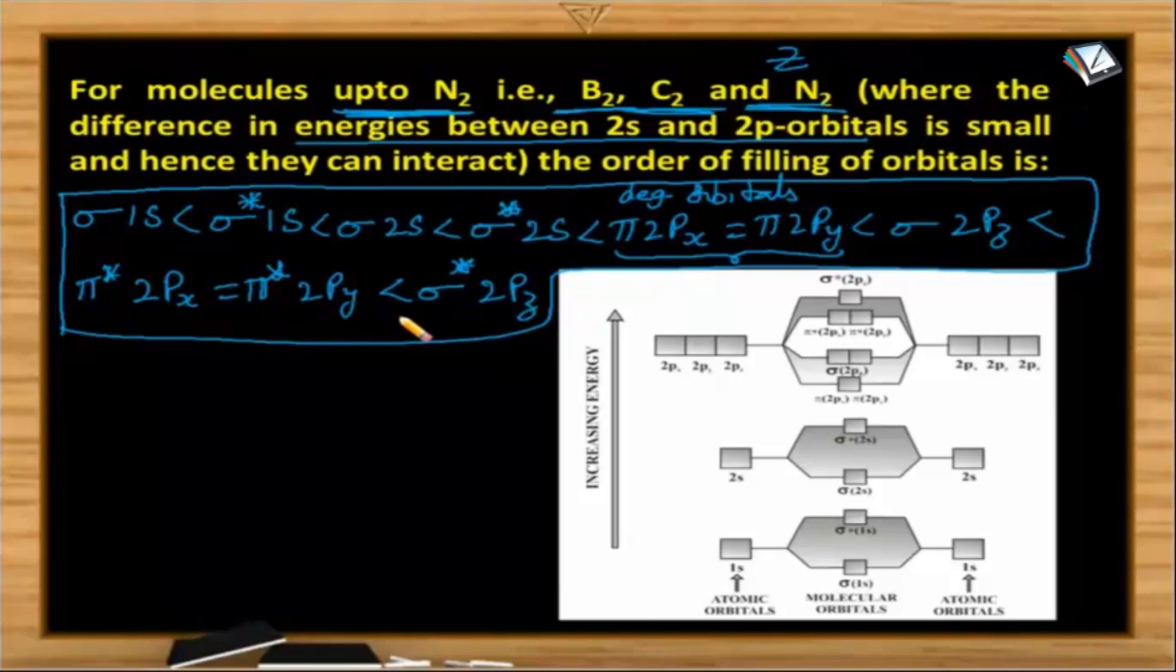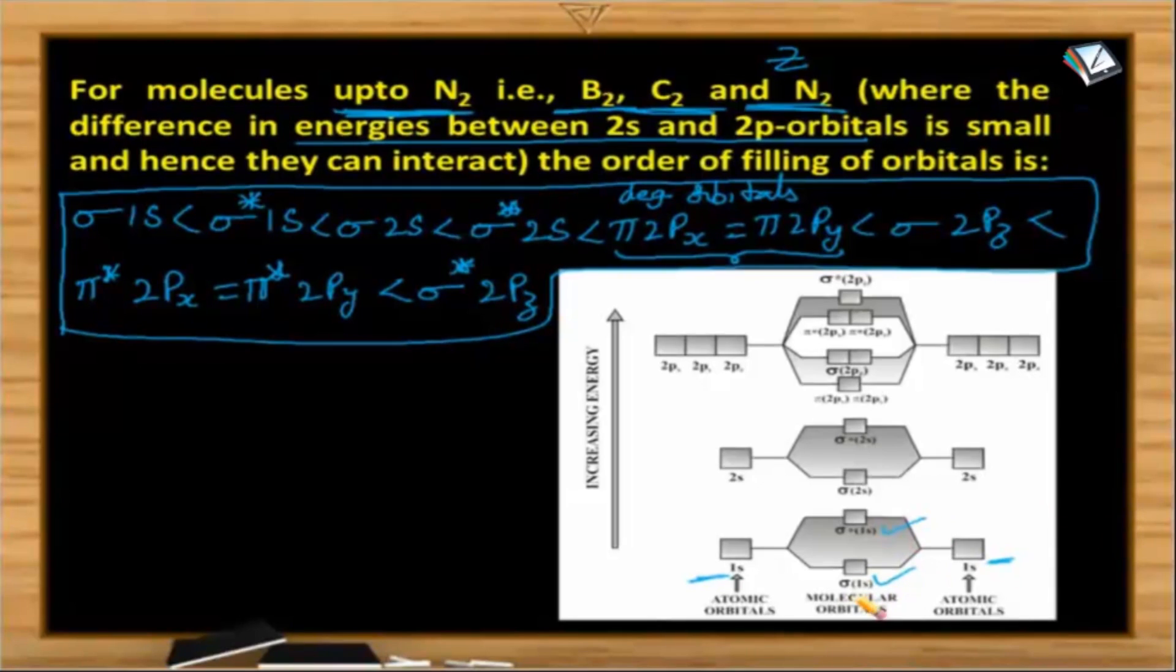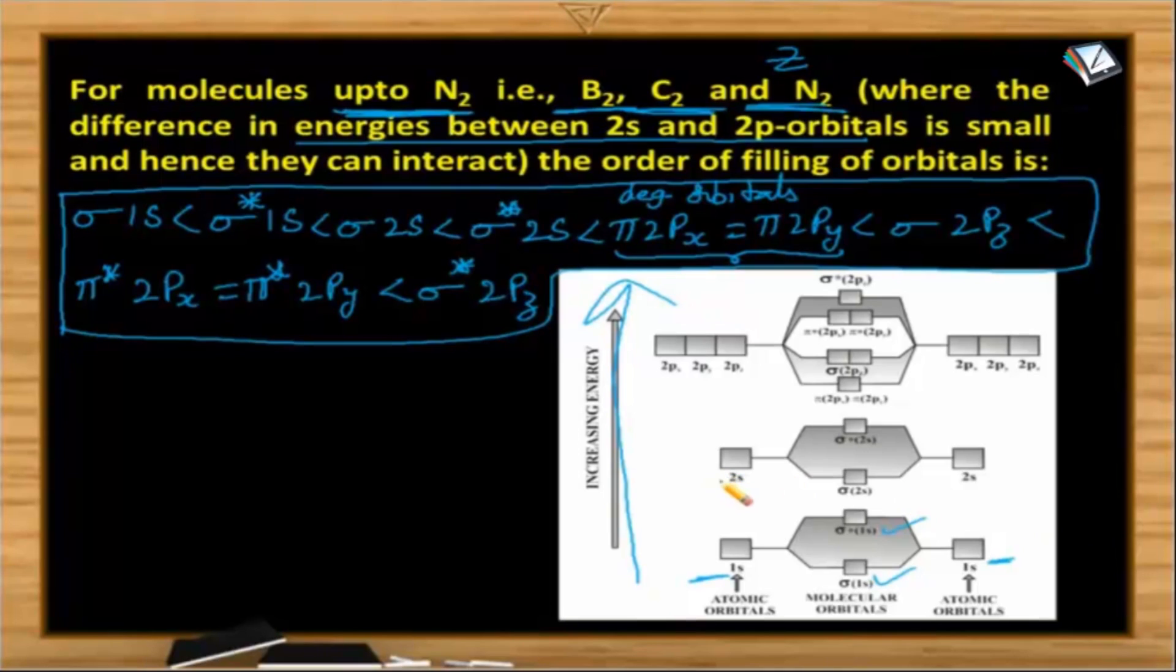So unless this is clear, we cannot work out any objectives. See here 1s orbital and 1s orbital whenever combining we get sigma 1s and sigma star 1s. This is the increasing order of the energy of these orbitals. Then 2s and 2s whenever combining we are getting sigma 2s and sigma star 2s.